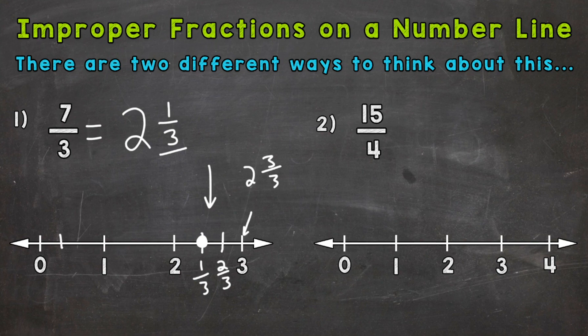Let's cut the rest of the number line in thirds between the whole numbers. Here would be one third, two thirds, three thirds, four thirds, five thirds, six thirds, and seven thirds. So we end up at the same place right here. And that makes sense because seven thirds is equivalent to two and one third.